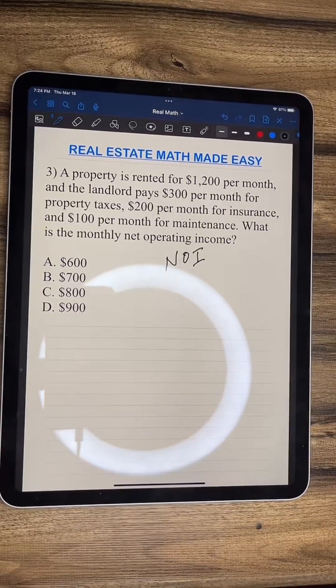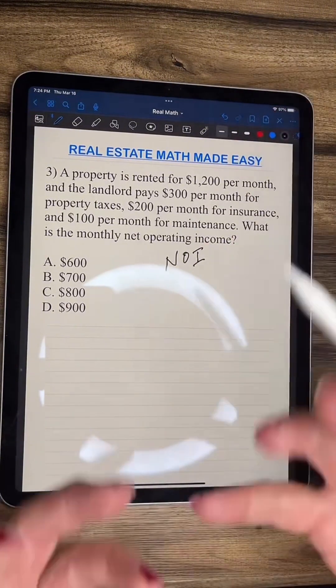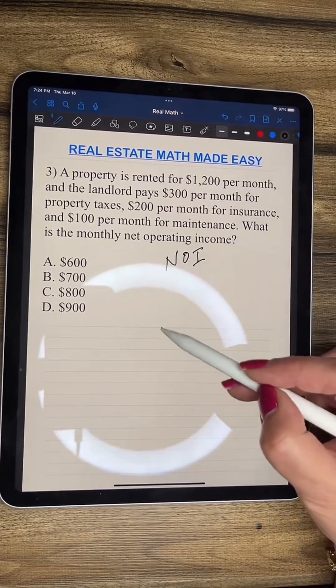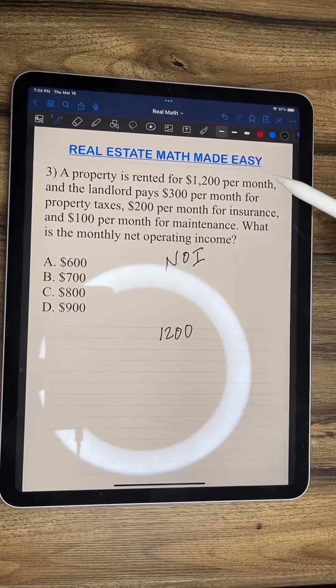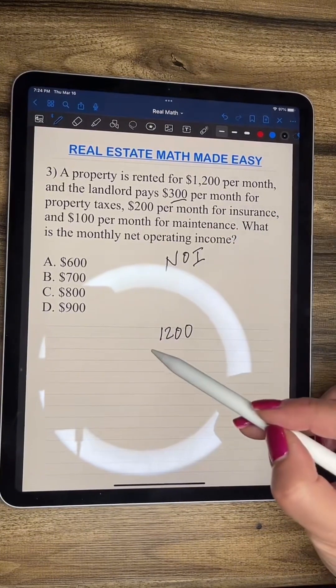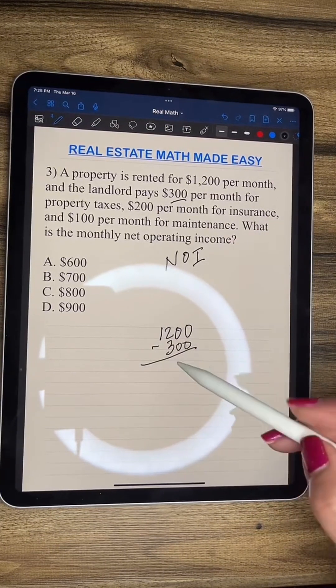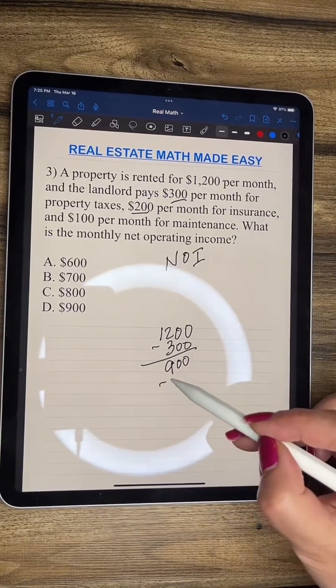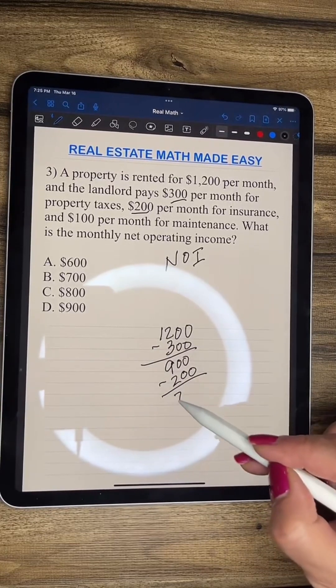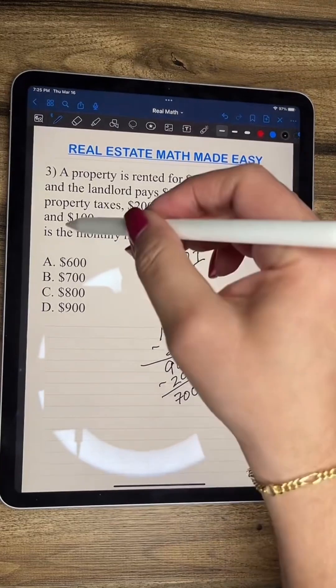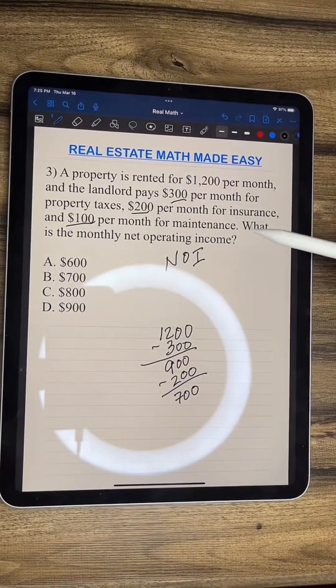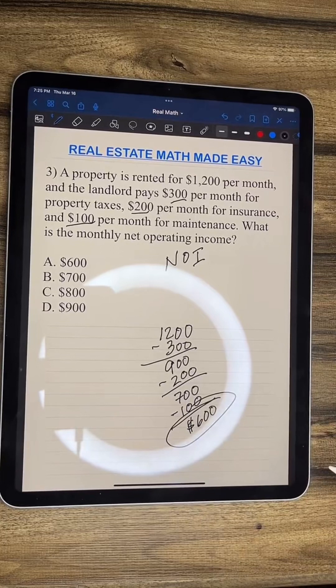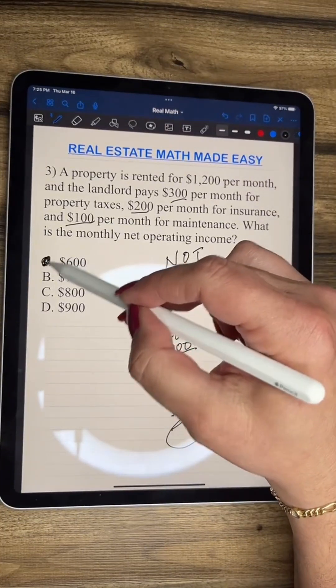So net operating income is basically what is it that you're going to net, like your paycheck, after everything has been paid. Basically here, we're going to get the $1,200 that this landlord gets per month, and then he has to pay $300. So we're going to subtract $300 from the $1,200, and we get $900. Then he has to pay $200 for insurance a month, and then we get $700. And then we have to subtract the $100 for maintenance that he's paying. So minus $100. So his net operating income is $600. So the answer has to be A.